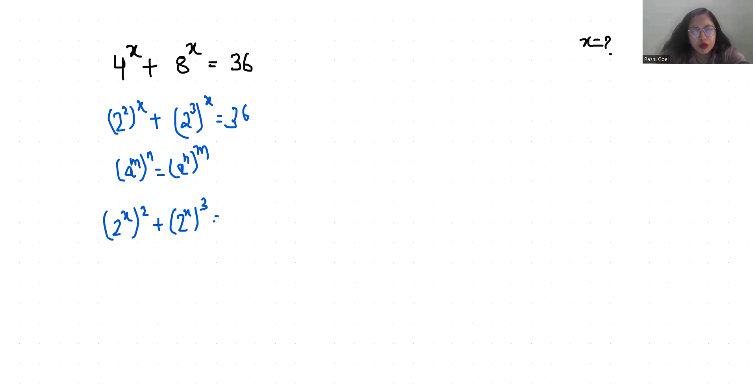Now I am going to take substitution. Let 2 power x as a. So a square plus a cube minus 36 equals 0. So a square plus a cube minus 27 minus 9 equals 0.